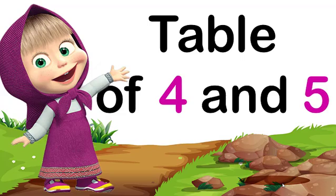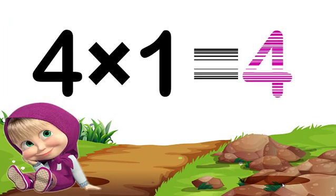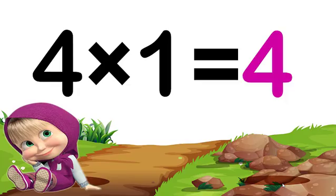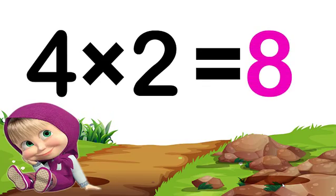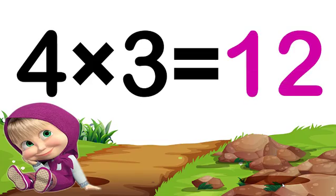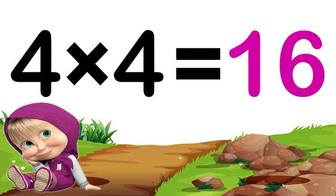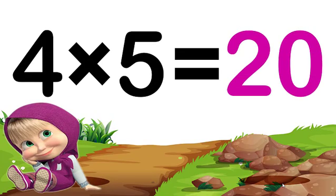Hi children, today let us learn the table of 4 and 5. Let's start children. Table of 4: 4 1's are 4, 4 2's are 8, 4 3's are 12, 4 4's are 16, 4 5's are 20.